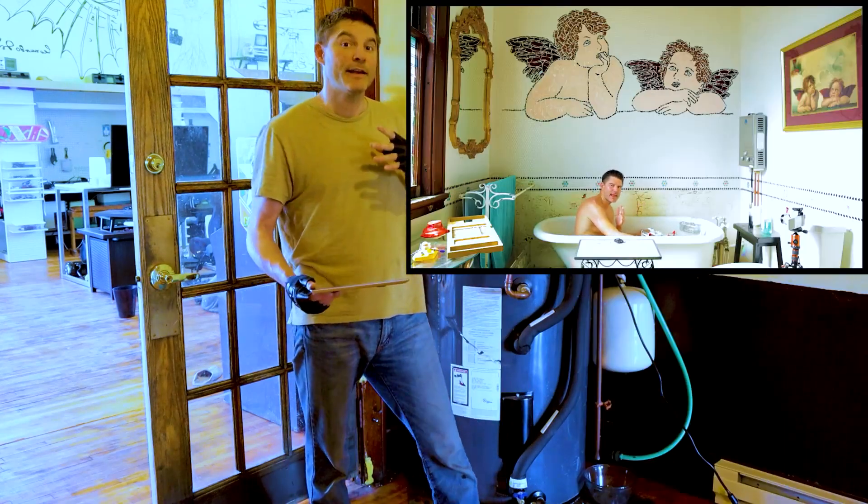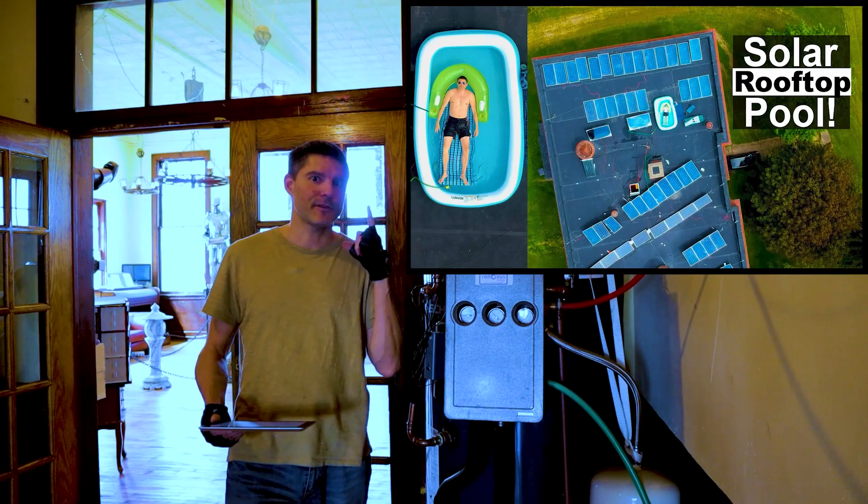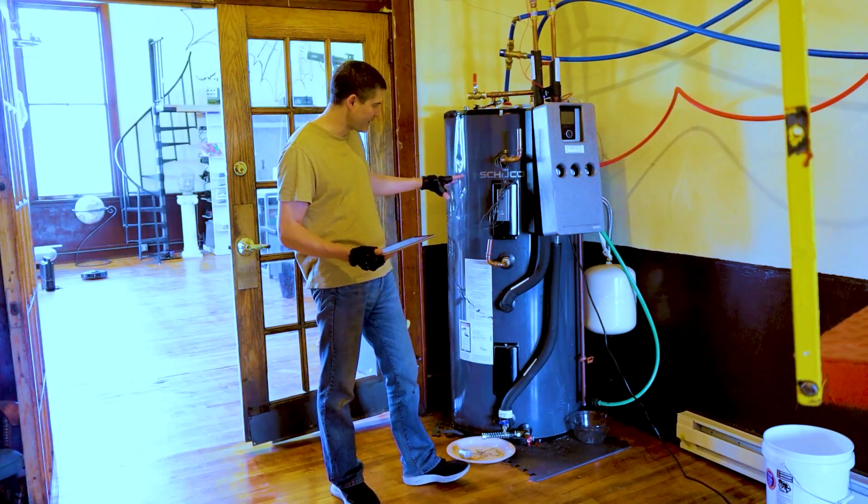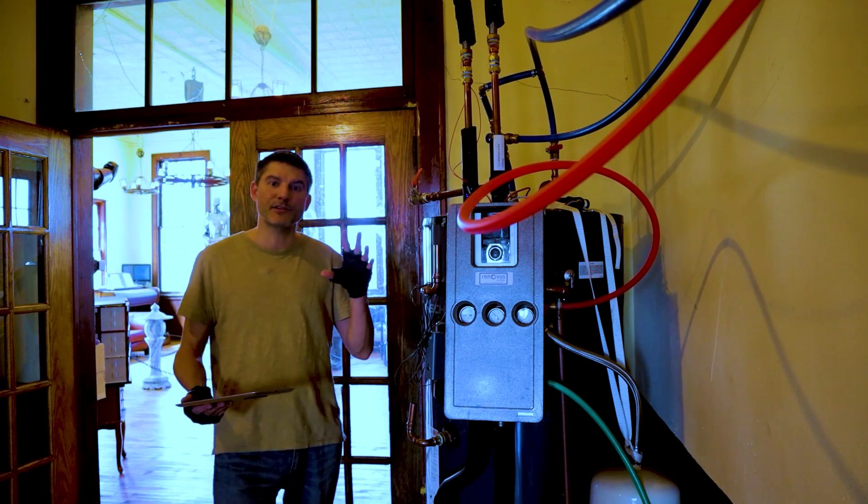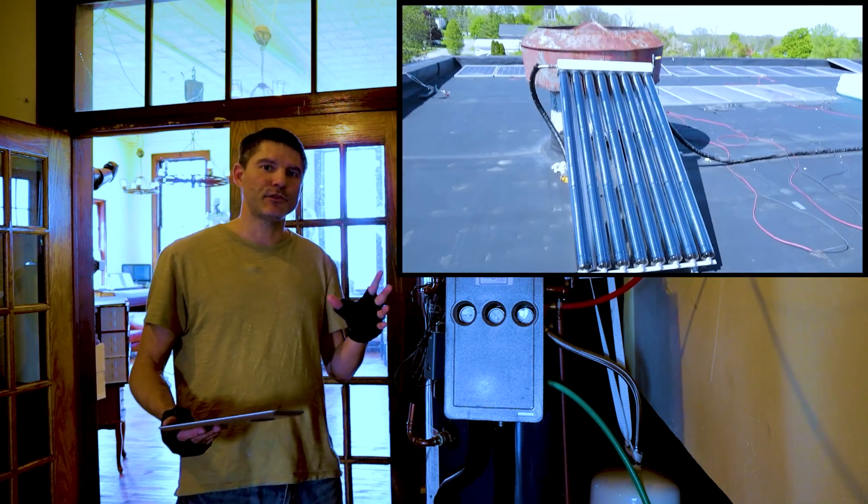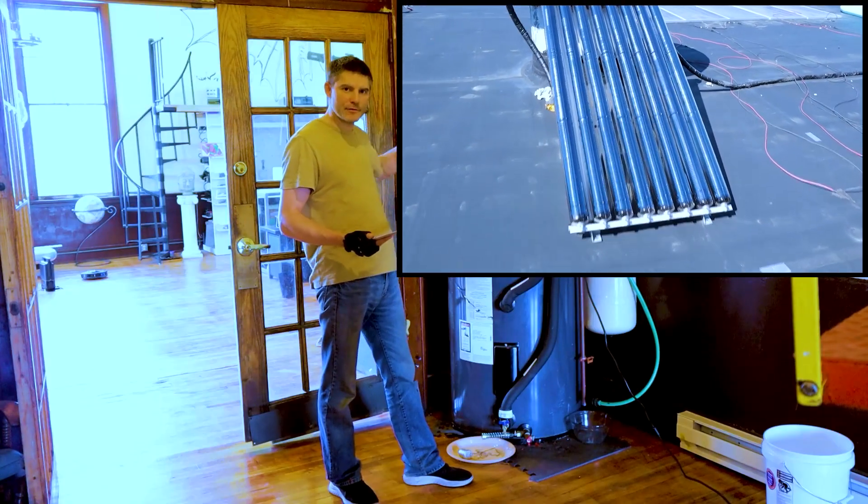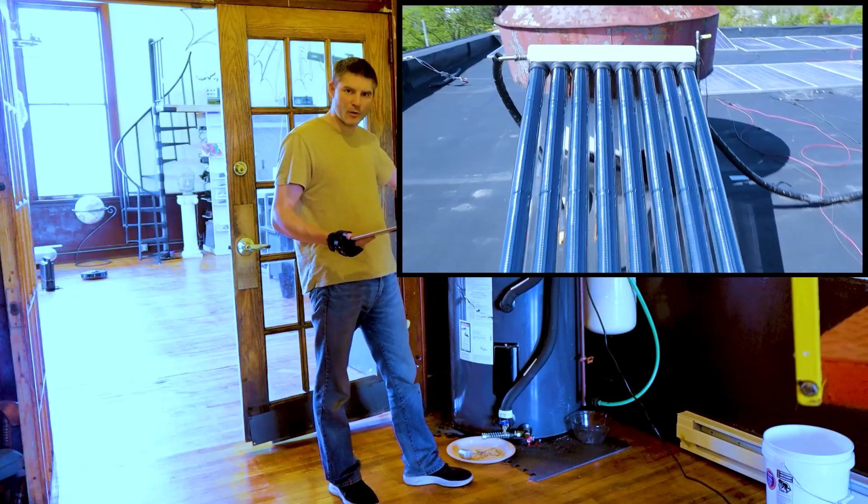and now the new infinity pool up on the roof. The way it works, instead of using electricity or gas to heat the water in the tank, this system has special evacuated vacuum tubes up on the roof that heat up water which we then circulate through the system and heats up our hot water tank.